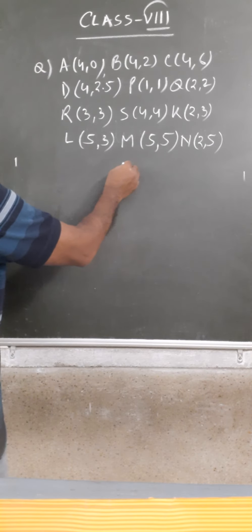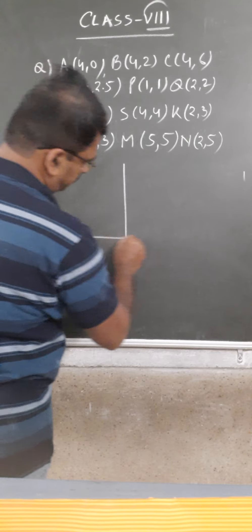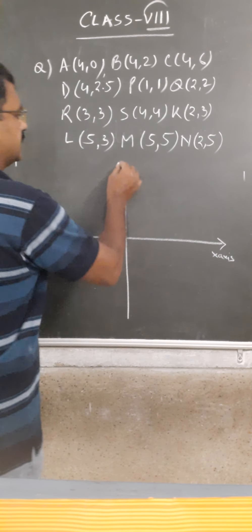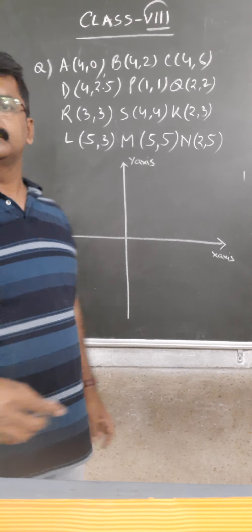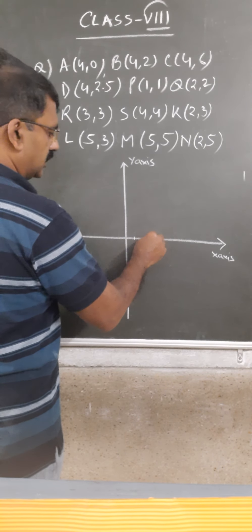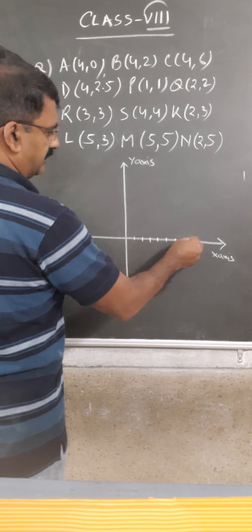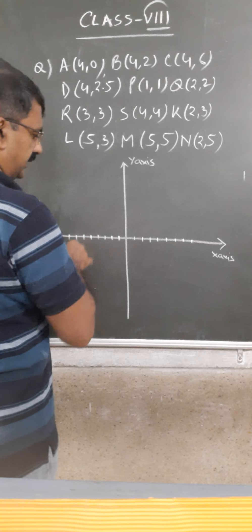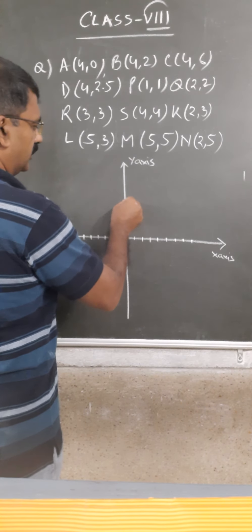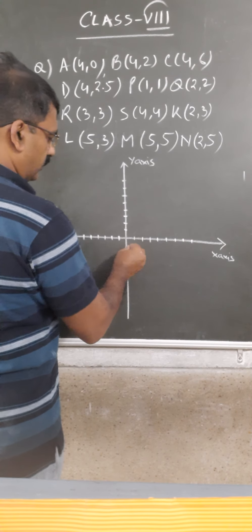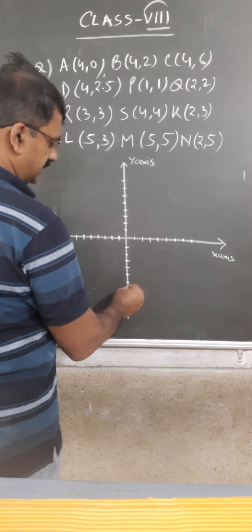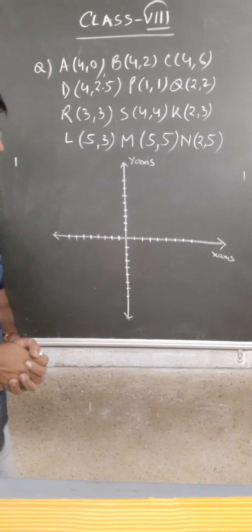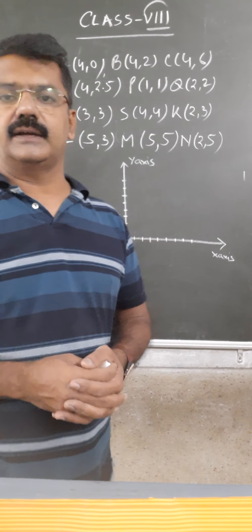First of all I will make the graph like this. This is the x-axis and this is the y-axis. On the x-axis we mark 1, 2, 3, 4, 5, 6, 7, 8 and on the other side minus 1, minus 2, minus 3, minus 4, minus 5, minus 6, minus 7, minus 8. Similarly on the y-axis: 1, 2, 3, 4, 5, 6, 7, 8. If you use a graph paper you don't have to make these markings because they are already there.